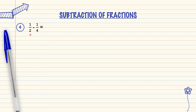Between number 2 and number 4, which number is smaller? Yes, number 2. This means number 2 will be changed to become number 4, like this denominator.